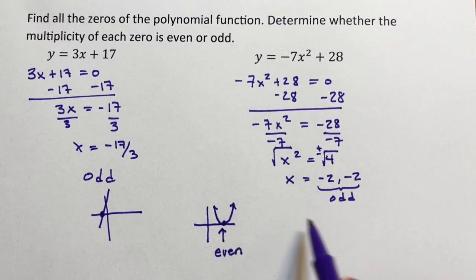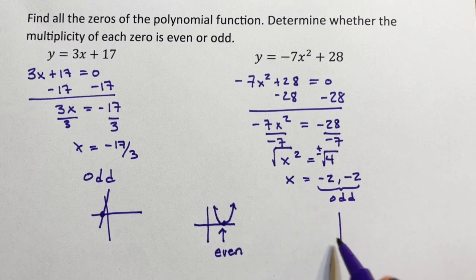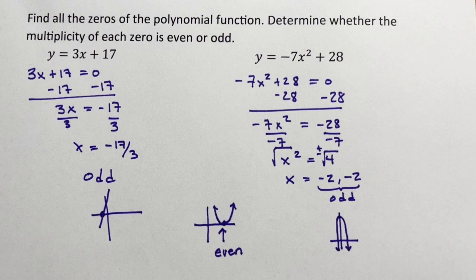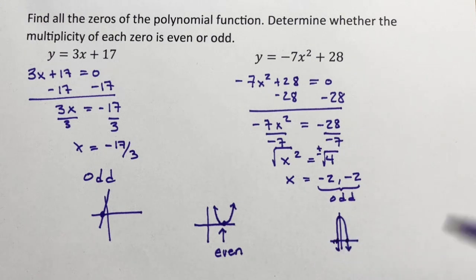So, this parabola, if we were to graph it, it's going to be very skinny. Looks like this. It points downward. It has two crossings, and each of these are odd, which means they actually cross the x-axis.